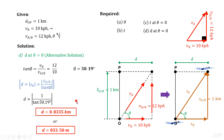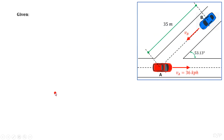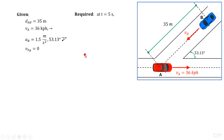Let's proceed now with our next problem. In this problem, we are given the distance between cars A and B at their initial position equal to 35 meters. Car A is moving with constant velocity equal to 36 kph, while car B is accelerating at a rate of 1.5 meters per second squared starting from rest. We are required to solve, after 5 seconds, the relative position and velocity of car B with respect to car A. Since we are required to solve for relative displacement, we need to lay out the displacement vectors of the given cars to have a geometrical basis for our solution.